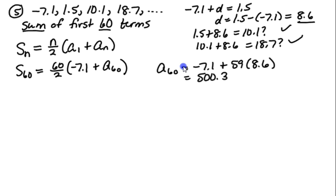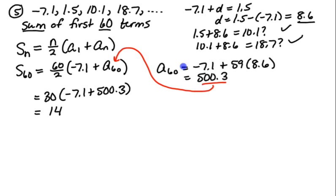So this number here, 500.3, goes into the formula here as my last term in my sequence. This is 30 times negative 7.1 plus 500.3, and this turns out to be 14,796. That is the answer to number 5.